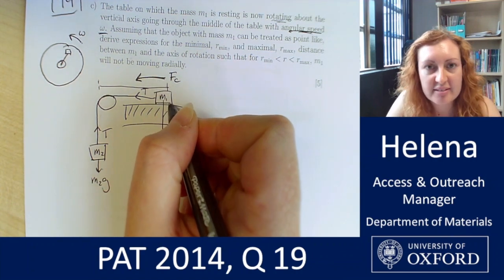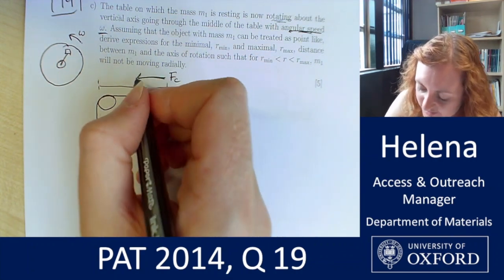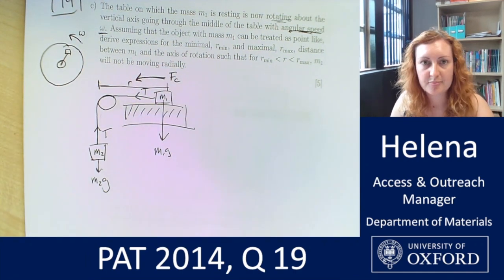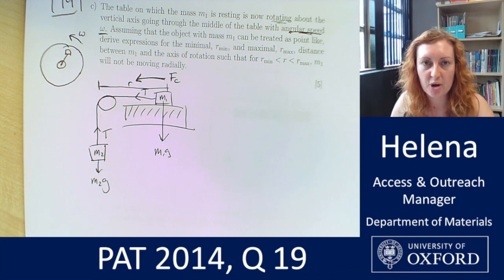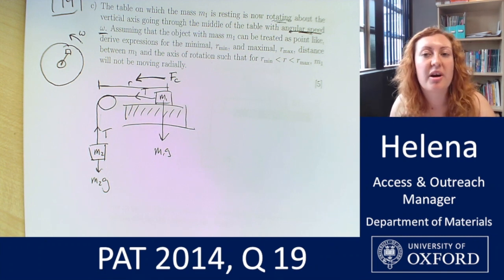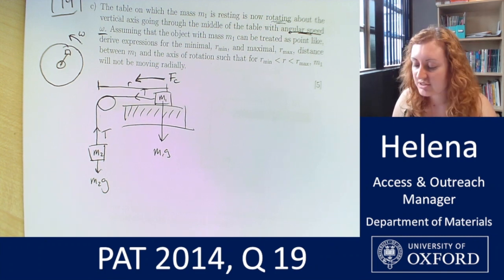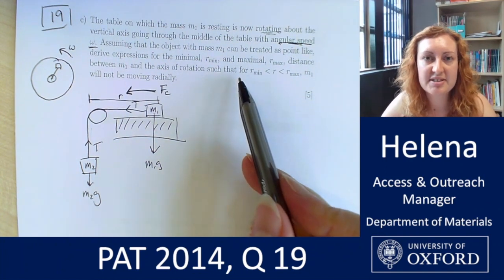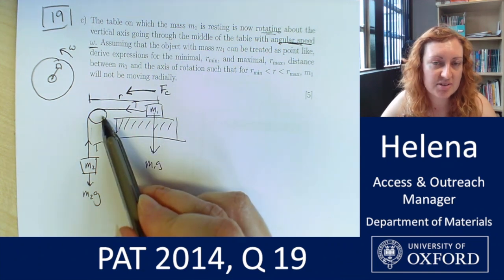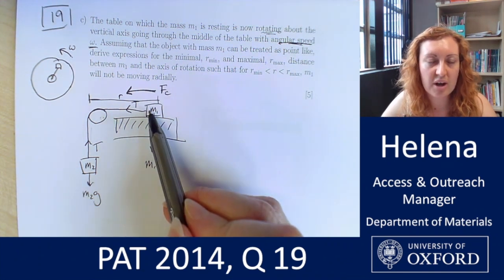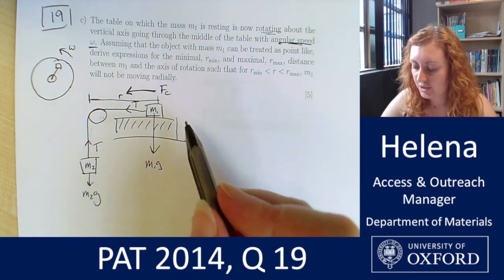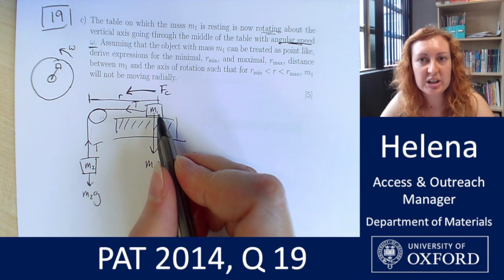Imagine this is a point-like object, obviously it's not in my drawing, but imagine it is for that distance. And we have this distance R here, between the block M1 and the central axis of rotation. Now remember we are considering friction, so at these two points here, we're being asked to find the values for R at which M1 is not going to move radially, so it's not going to move any closer to the hole or any further away from the hole.